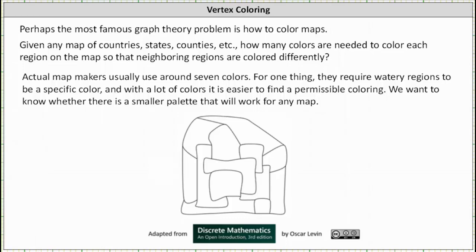Welcome to a lesson on vertex coloring. Perhaps the most famous graph theory problem is how to color maps. Given any map of countries, states, counties, etc., how many colors are needed to color each region on the map so that neighboring regions are colored differently?